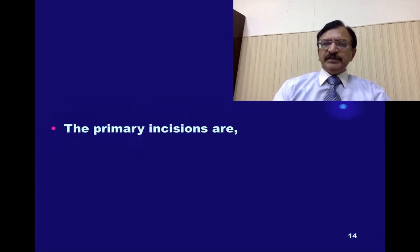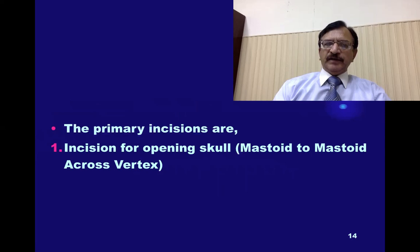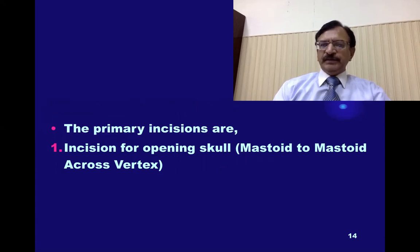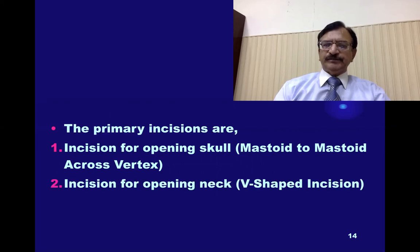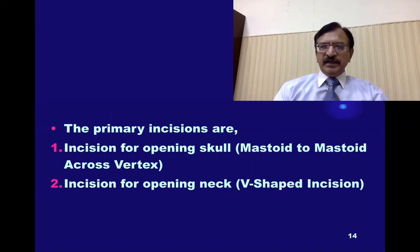The primary incisions are for the opening of the skull — from the mastoid process to the other mastoid across the vertex. Then the incision for the opening of the neck is V-shaped. Whenever there is interference at the level of the neck, a V-shape incision is made at the neck.